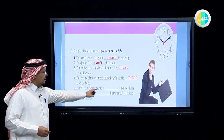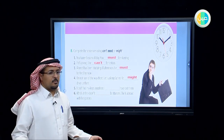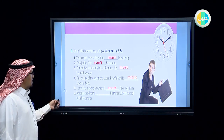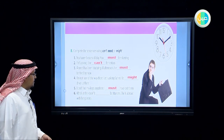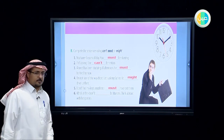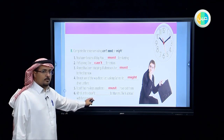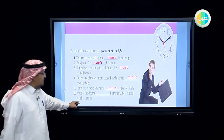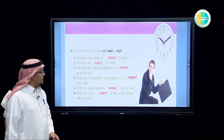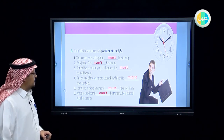Number five: I can't find my keys anywhere — I must have lost them. Number six: who's at the door? It can't be Mariam — she's abroad with her parents. There is no possibility that Mariam is at the door because she is abroad with her parents. You can stop the video now to copy the answers in your book, then play it back.